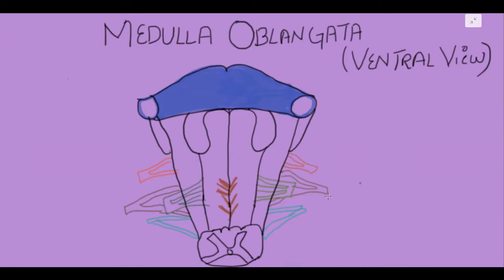Today's lecture is about the medulla oblongata. We will discuss the ventral view of the medulla oblongata. The brainstem is basically composed of three main parts.